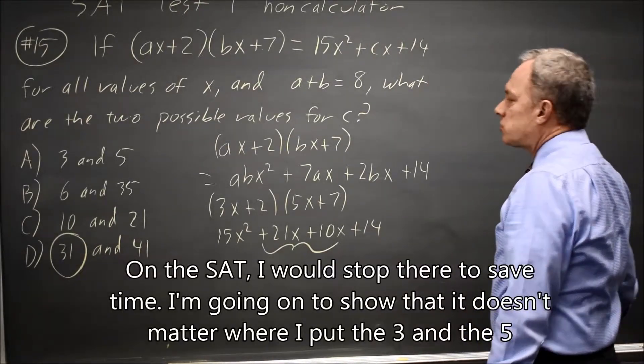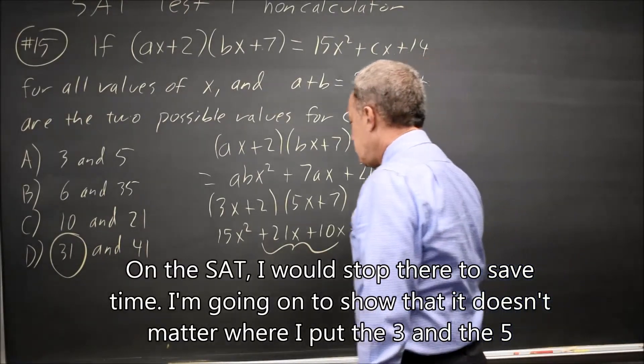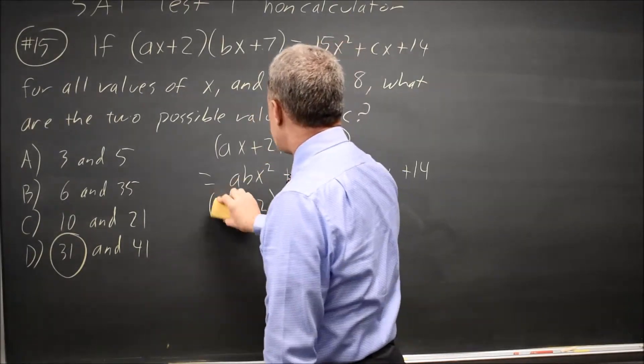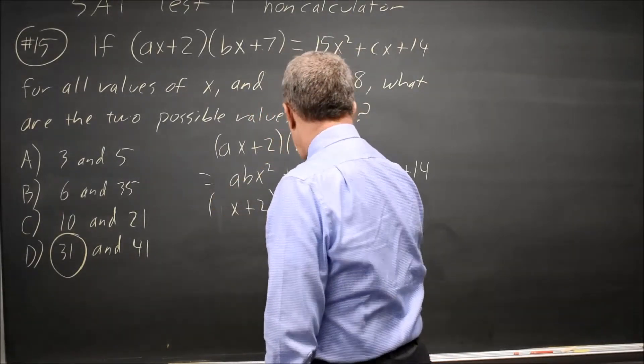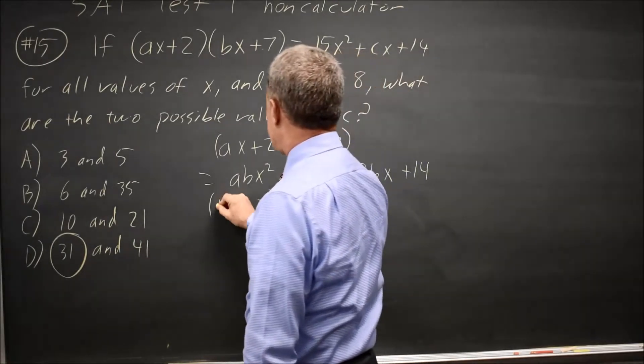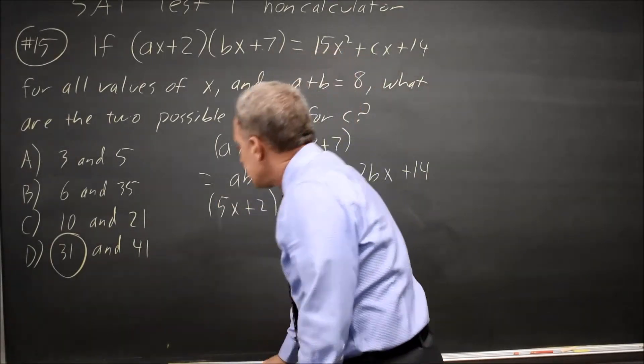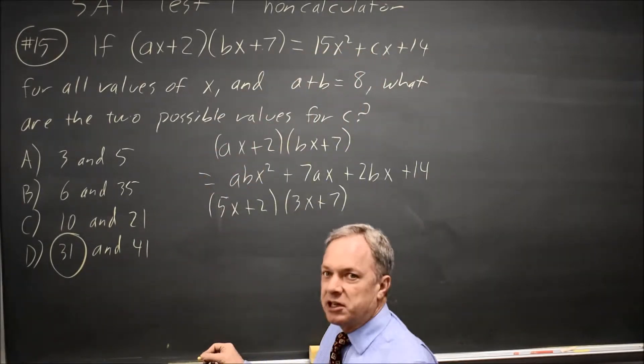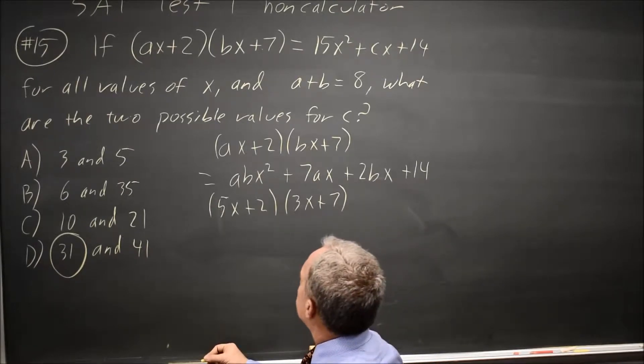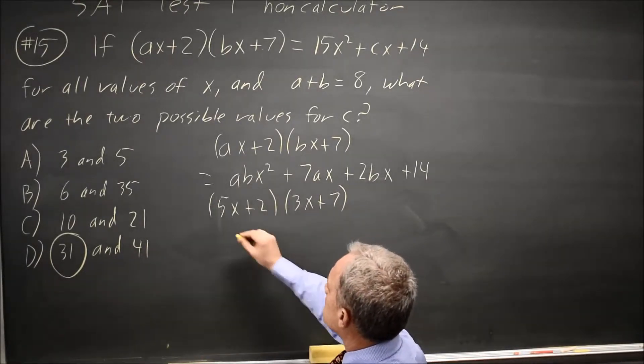But let's try the other choice. If instead of A equals 3, B equals 5, I swap them. A equals 5, B equals 3. It's not necessary to continue this, except for the joy of math and a second chance to see how to do this.